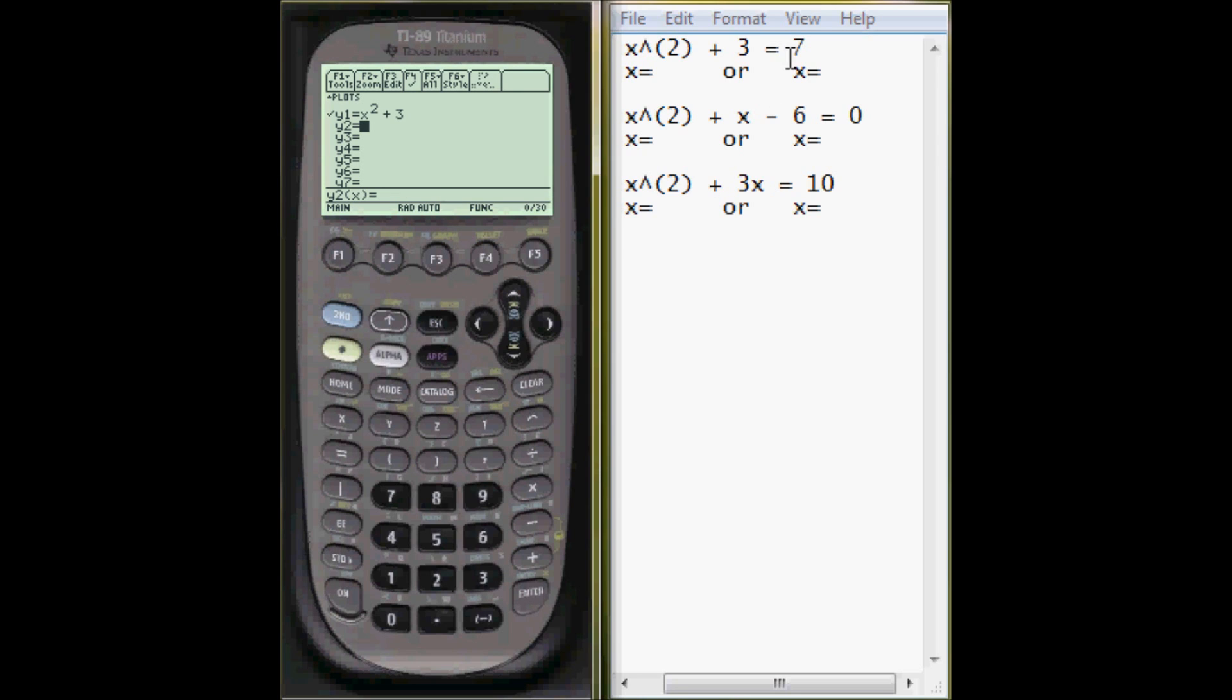And now I'll enter the second half of this equation as y2, which is y2 equals 7. Green diamond and F3 to graph. It'll take a little while to graph this, it'll say busy in the bottom right hand corner. And when this is done, press F5.